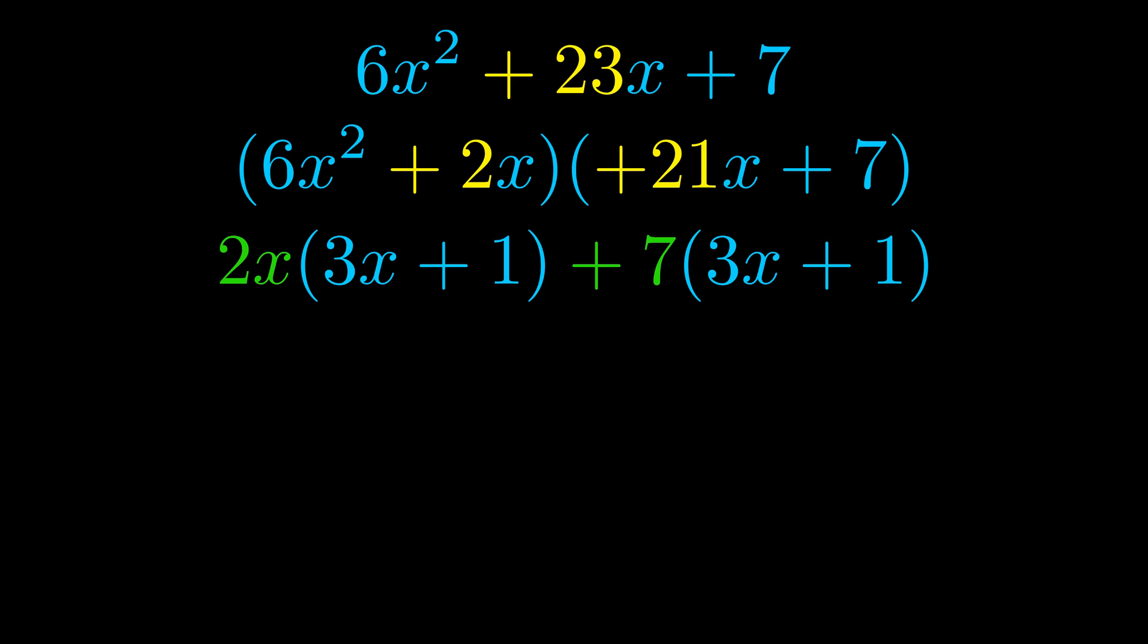Notice also how what remains inside of the parentheses is the same in both cases. The blue values are the same. Those blue values will become one of our factors and we will combine the two green values, the GCFs that we pulled out, to get the other one. And that is our fully factored equation.